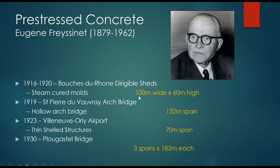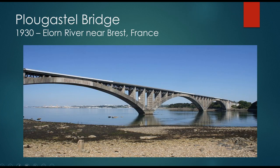The Plougastel Bridge was built in 1930, over the Elorn River near Brest in France. As you can see in the photo, these are no longer big and bulky structures — they are engineered, very sleek, and very elegant, an instrumental demonstration of what concrete could achieve by 1930.